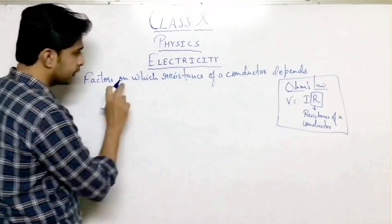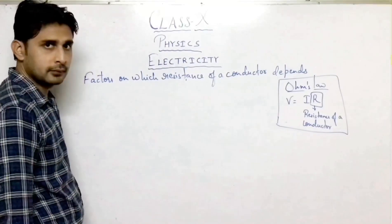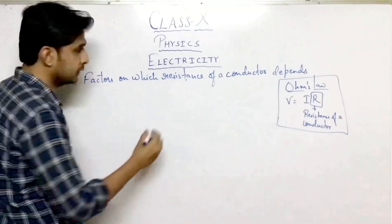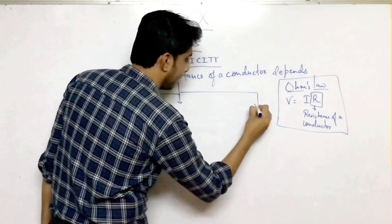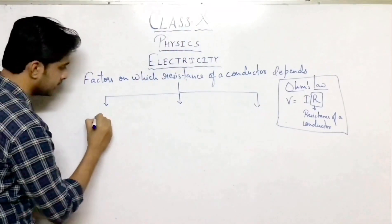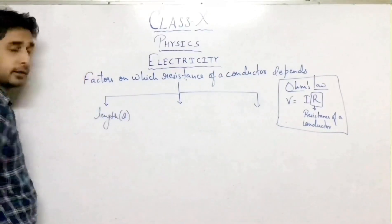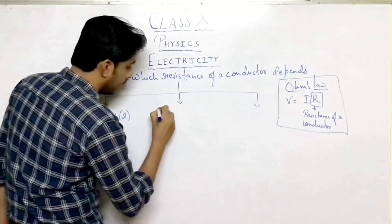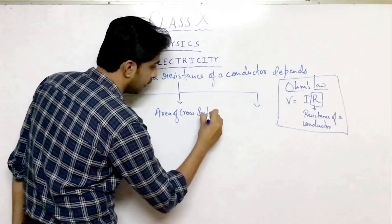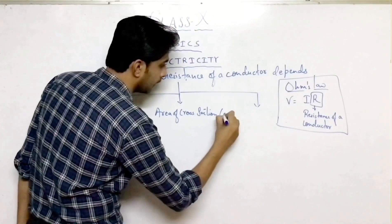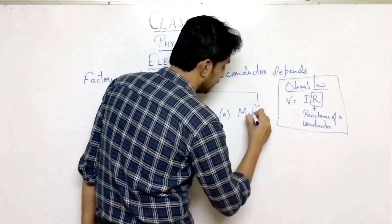Now, what are the factors on which this resistance of a conductor depends? There are three factors: first is length L of a conductor, second is area of cross section of the conductor, and third is the material of the conductor.